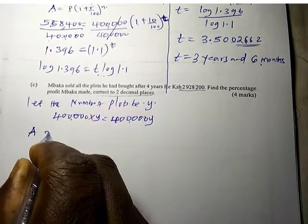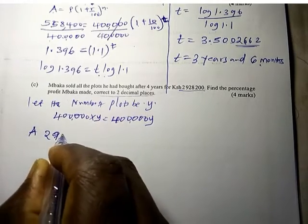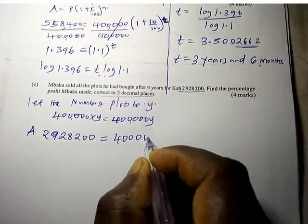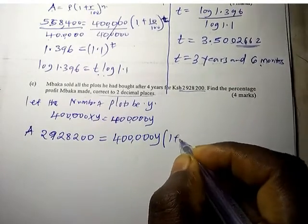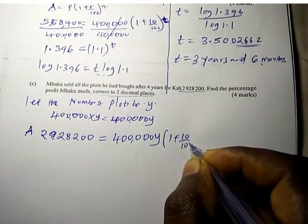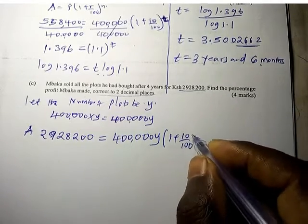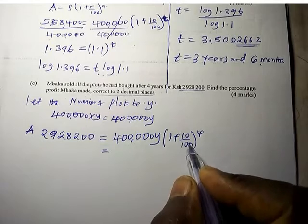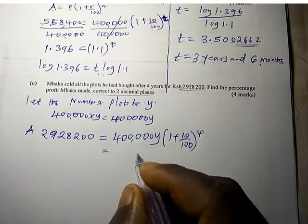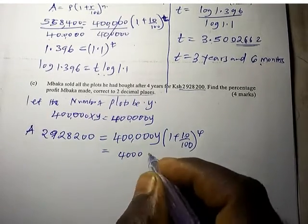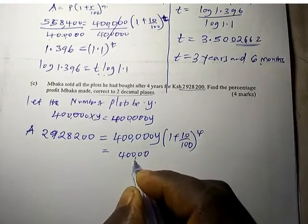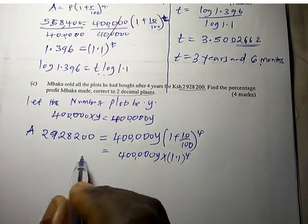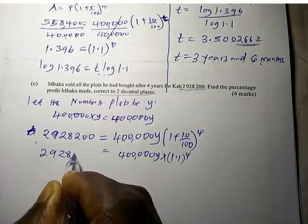Amount 2,928,200 equals the principal 400,000y into 1 plus 10 over 100 raised to power 4. This is 400,000y times 1.1 raised to power 4 equals 2,928,200.